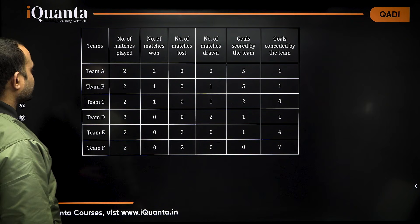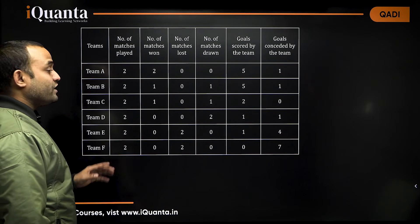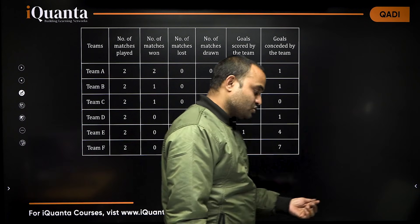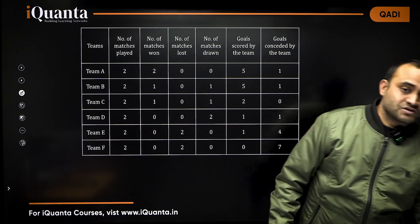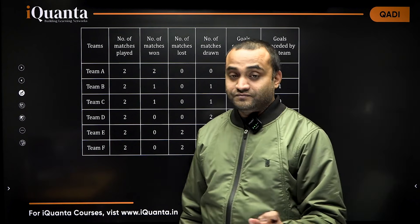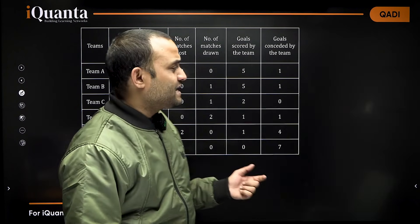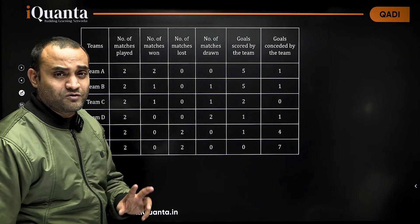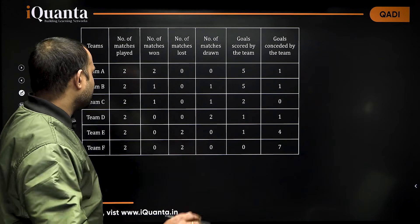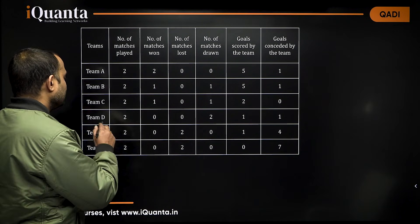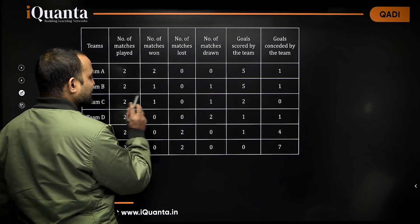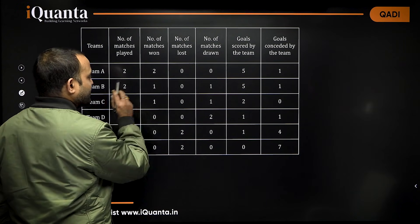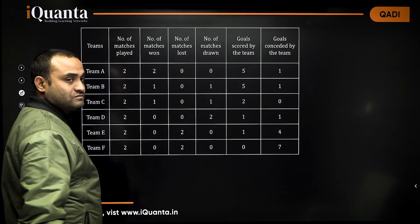Let us try to decode this. Where do we start? In games and tournament situations, you always start with draws. Team D has two draws. Team B has one draw, team C has one draw. That means team D has one draw against C and one draw against B.